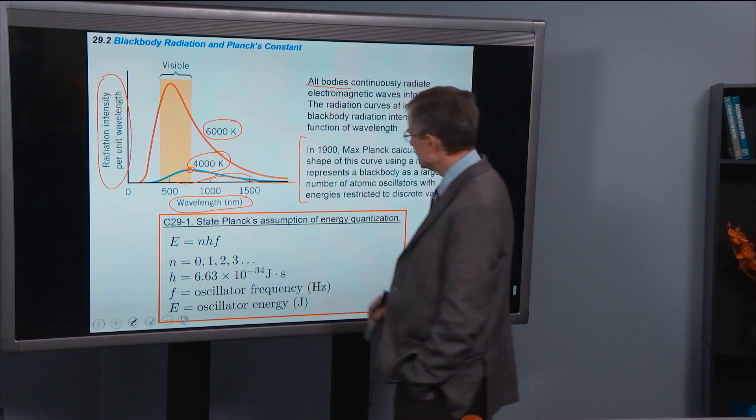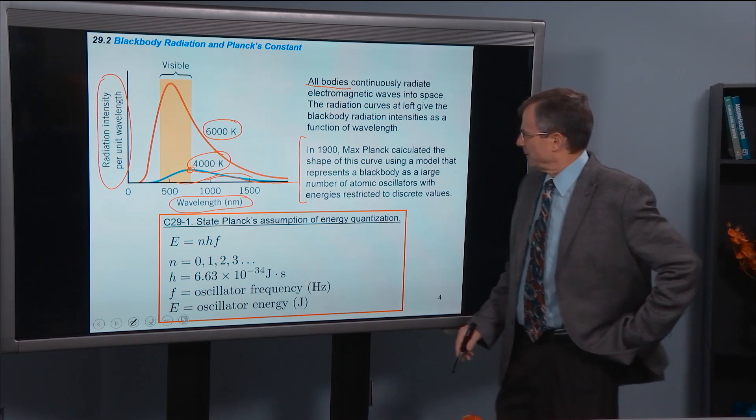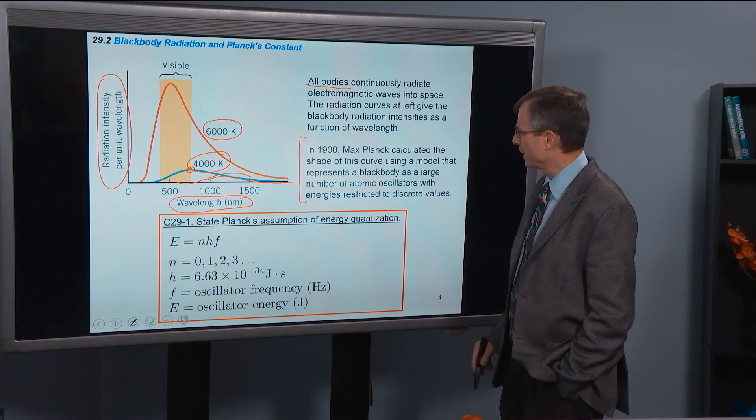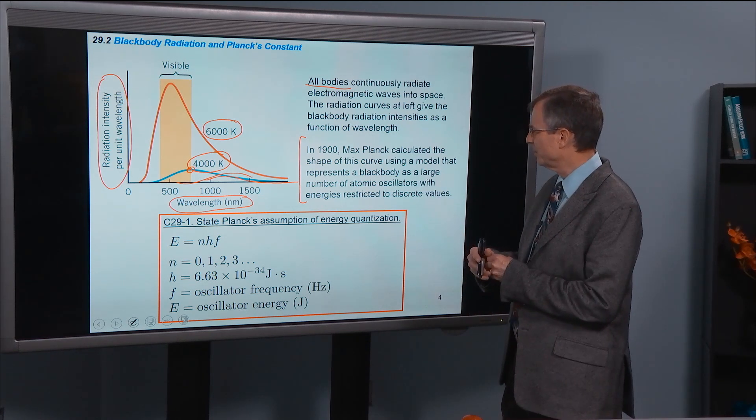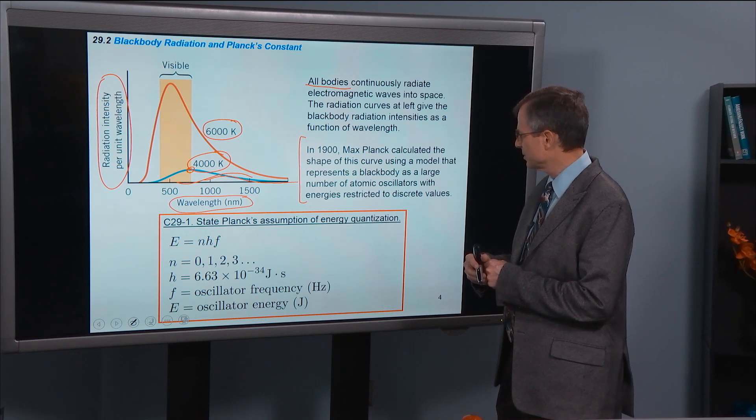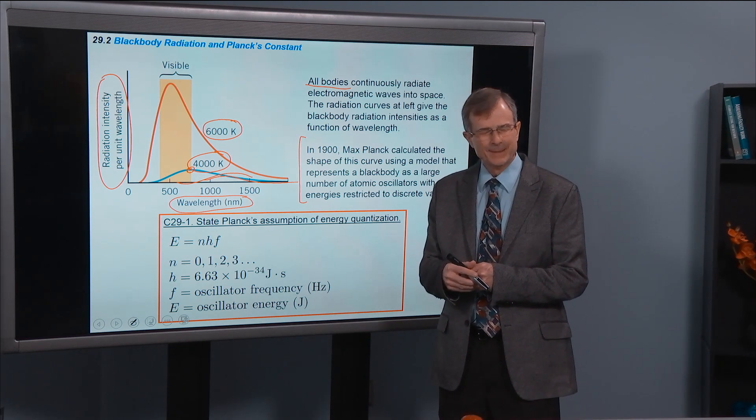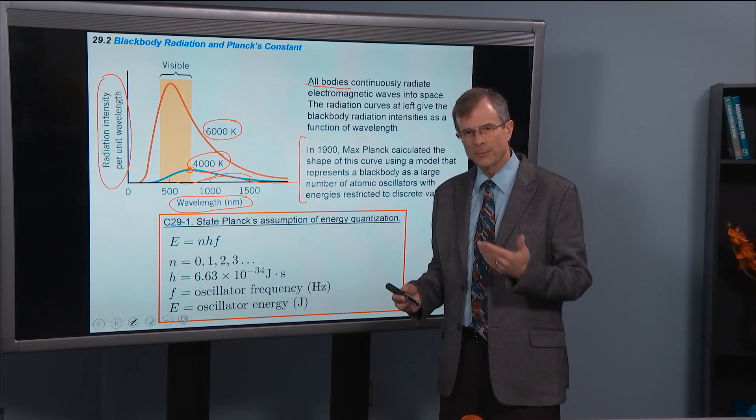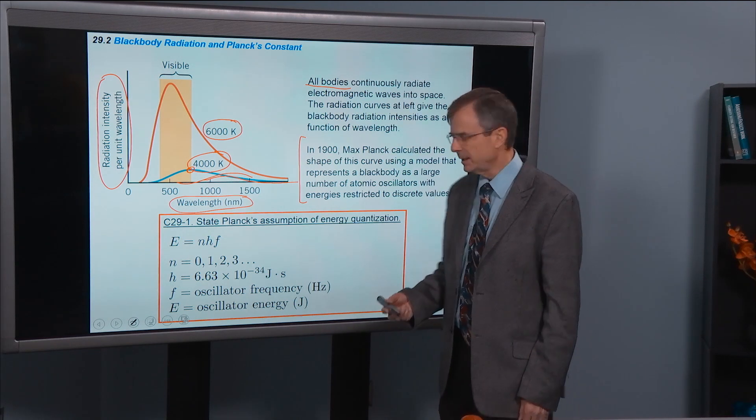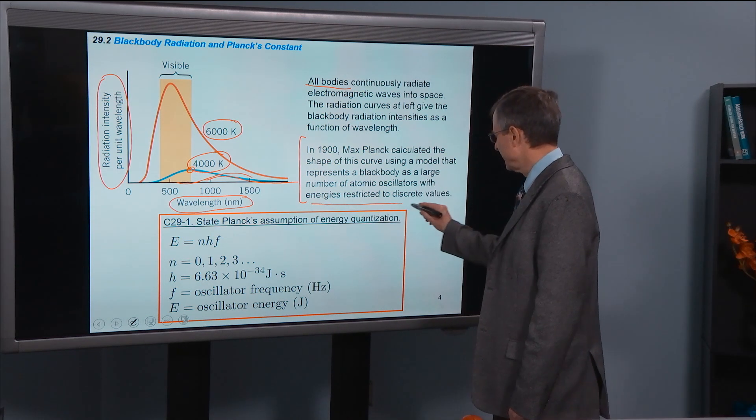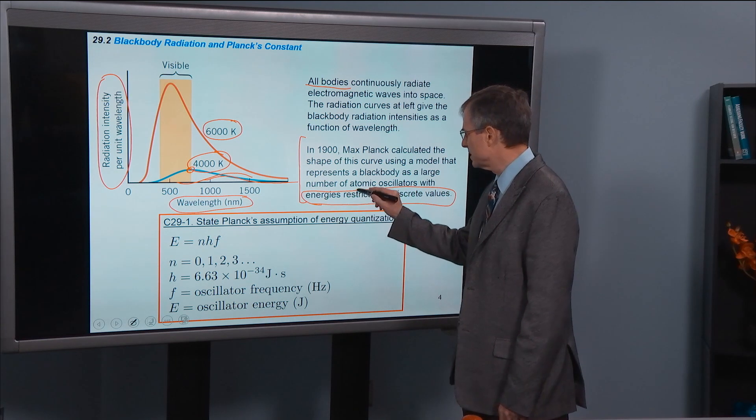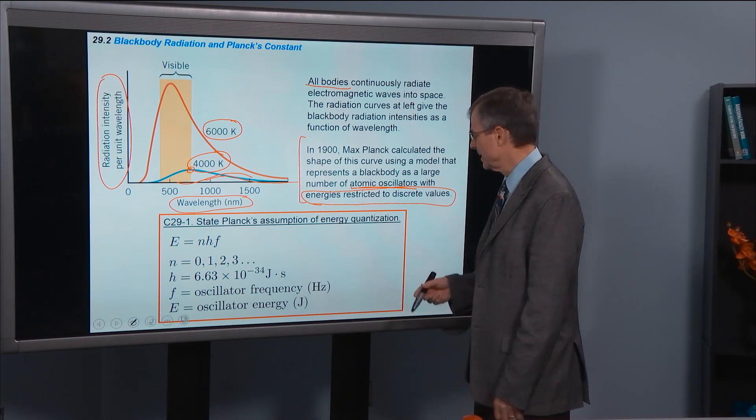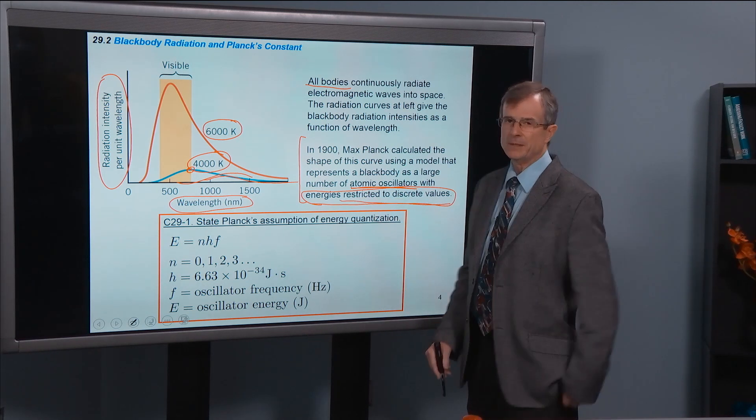In 1900, Max Planck, pronounced Planck, calculated the shape of this curve using a model that represents a black body as a large number of atomic oscillators, with energies restricted to discrete values. So he was just trying to understand this curve, and he actually replicated the curve very well, theoretically, with this very odd assumption that the energies of these atomic oscillators inside of a body, your body or the inside of that box, were restricted to discrete values.